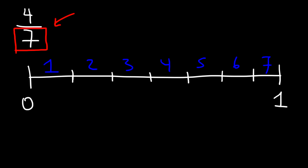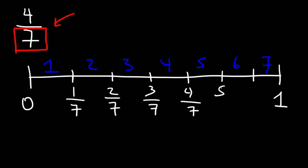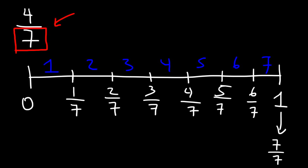At the first mark the value of the fraction is going to be 1 over 7, then 2 over 7, and you just count all the way to 7 over 7. One is the same as 7 over 7, since 7 divided by 7 is 1. We're looking for the location of 4 over 7, which is right here — this is where we place it.